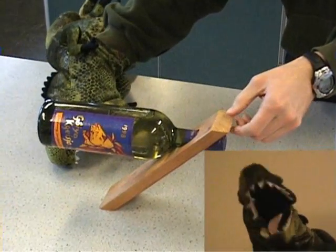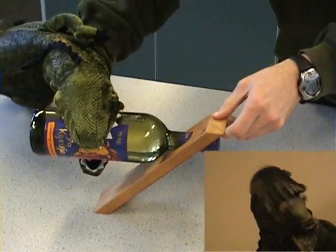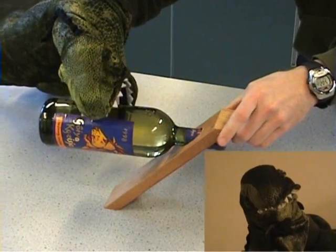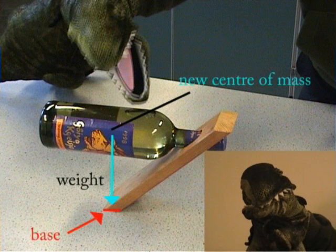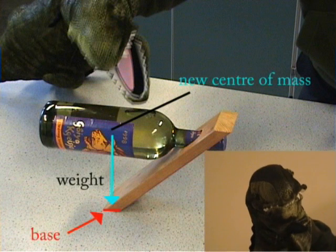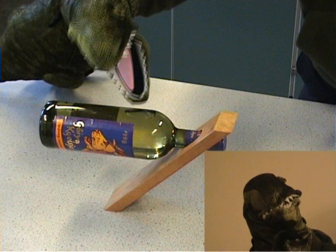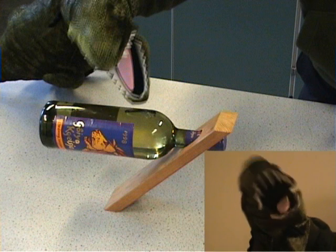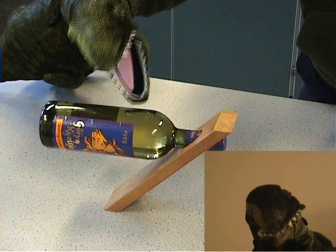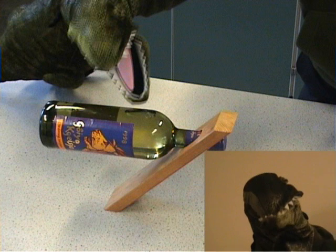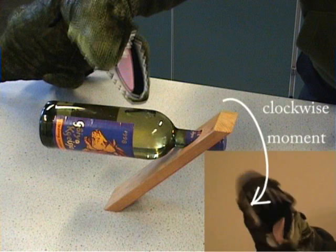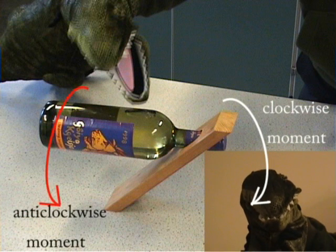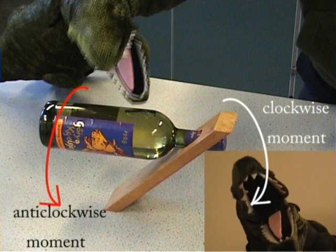The centre of mass of the object changes, so now it's above the base, so it's stable and it doesn't fall over. Another way of looking at this is that the weight on either side of the pivot is the same, so the object is balanced. The clockwise and anti-clockwise moments are the same — that's why it balances.